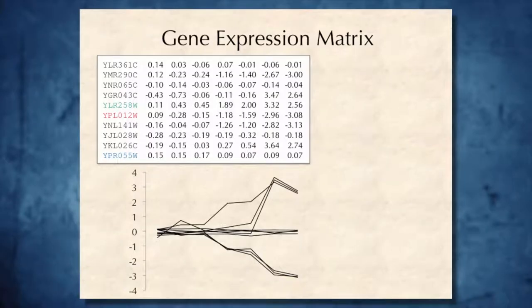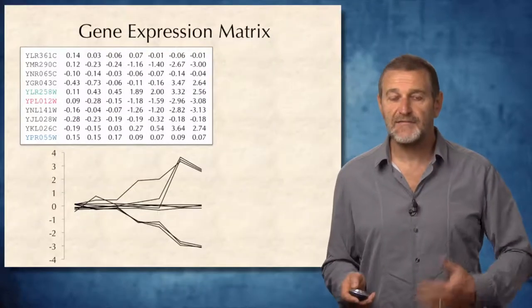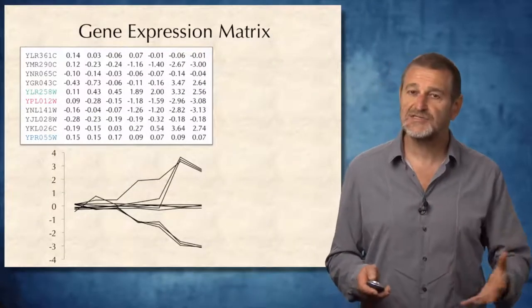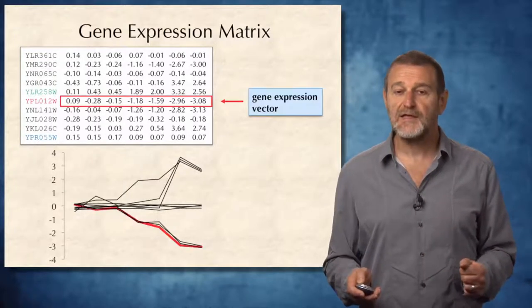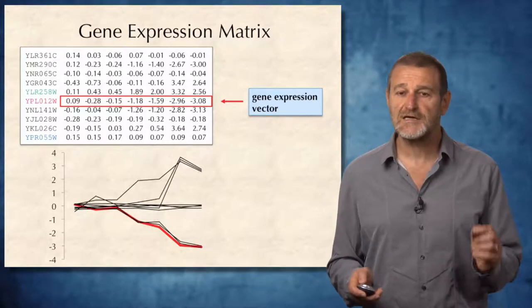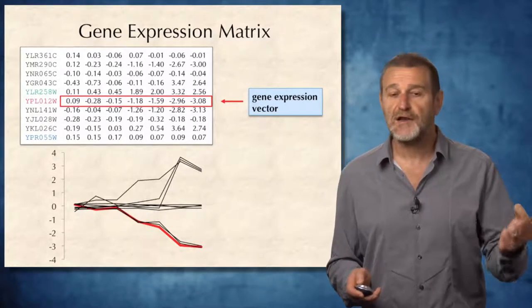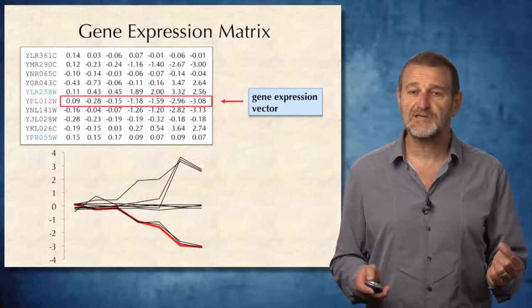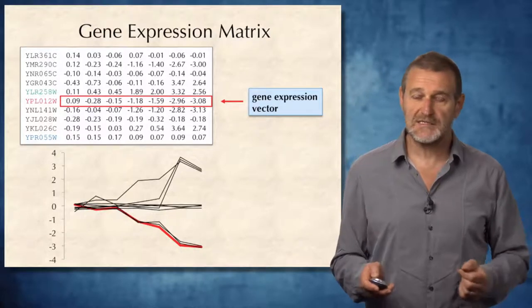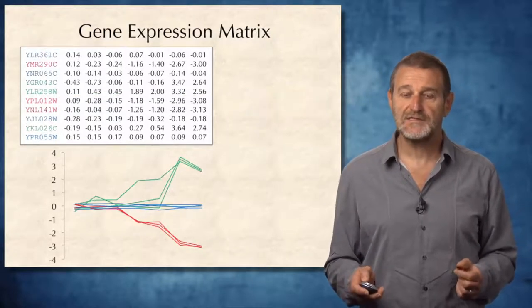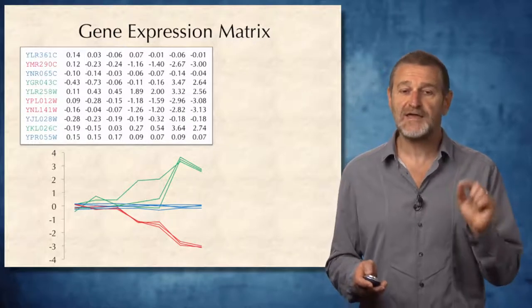Here's a little bit larger 10 by 7 gene expression matrix, and these 10 genes are also shown below as plots. Can we cluster these genes into groups of genes with similar behavior? Each row in the gene expression matrix corresponds to a gene expression vector, and you can see the plot of this gene expression vector at the bottom. Clearly, just looking at this picture at the bottom reveals three types of behavior.